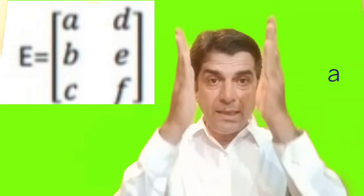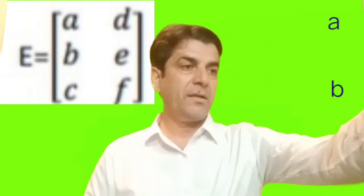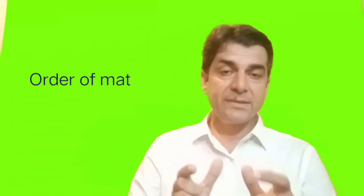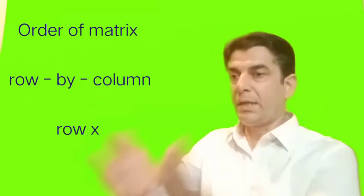And while the vertically arranged elements are called columns. As you are sitting there, first column, second column, third column. So the matrix have horizontally arranged elements, vertically arranged elements.